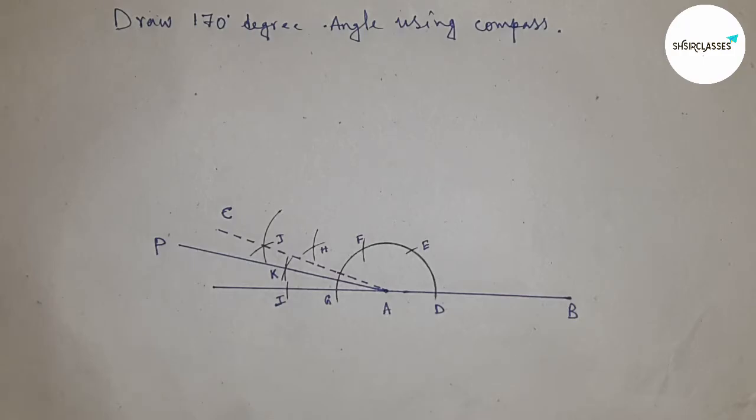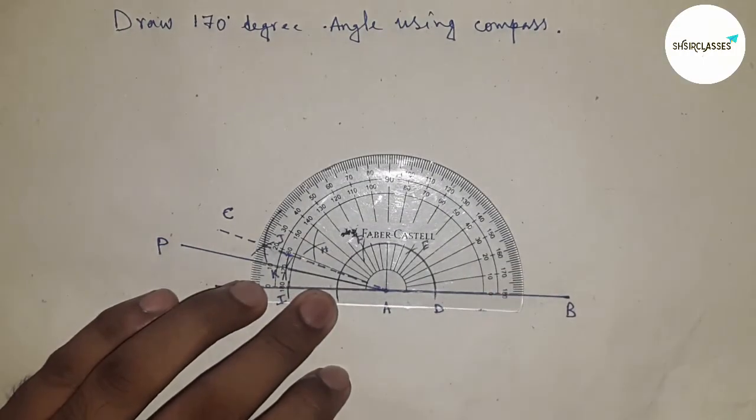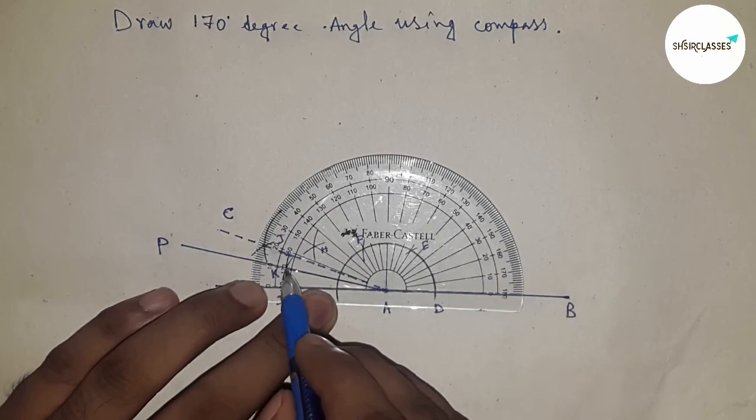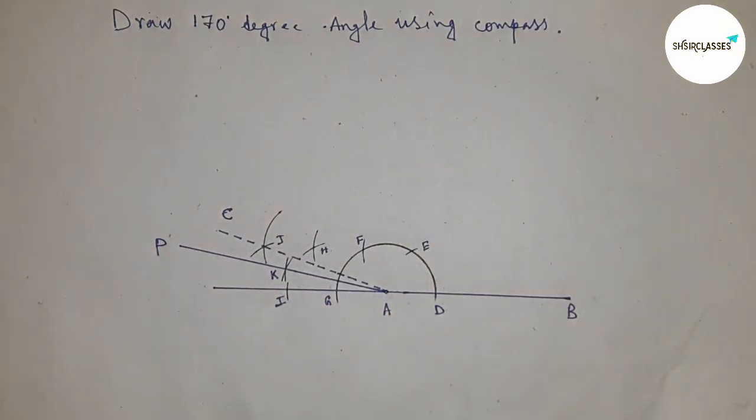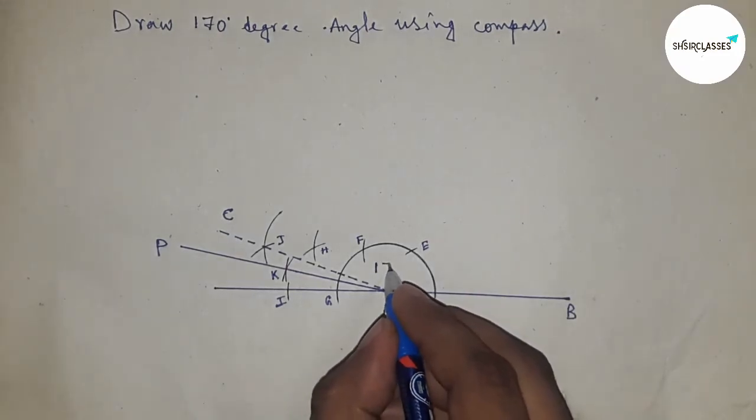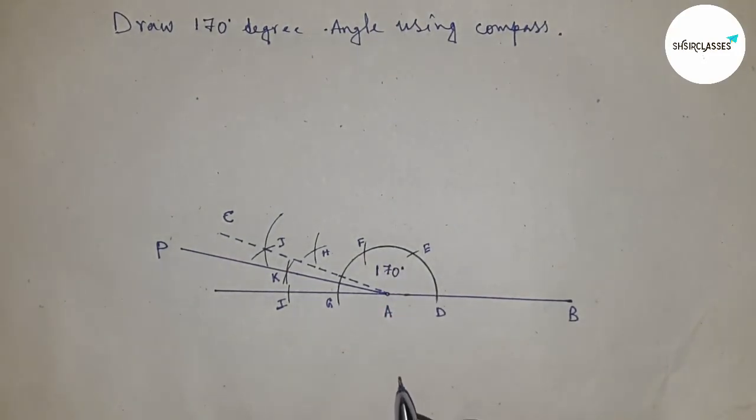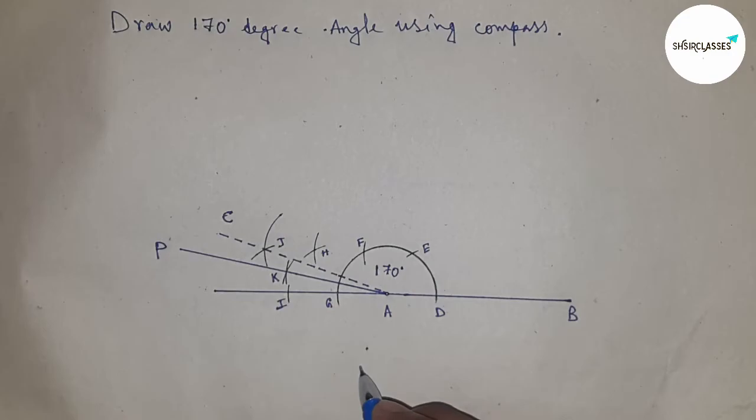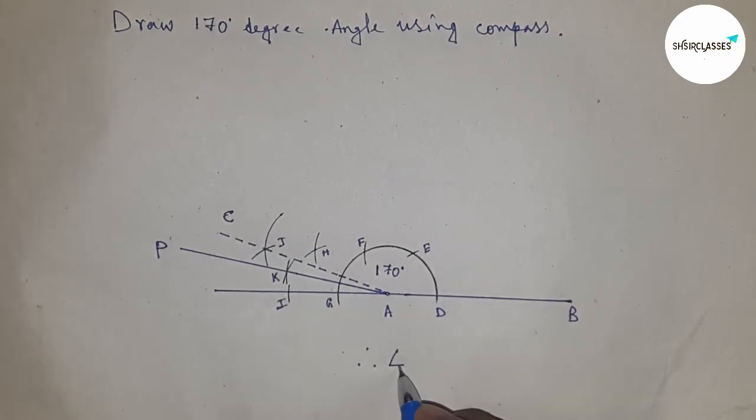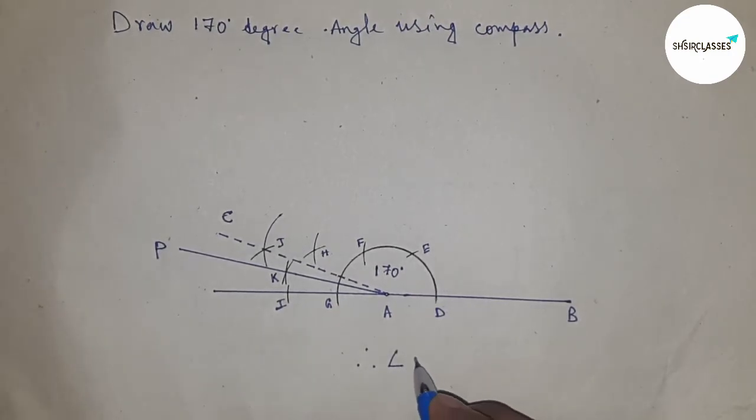Now checking whether it is 170 or not. So this is perfectly 170 degree angle. Therefore, angle PAB equals to 170 degrees.